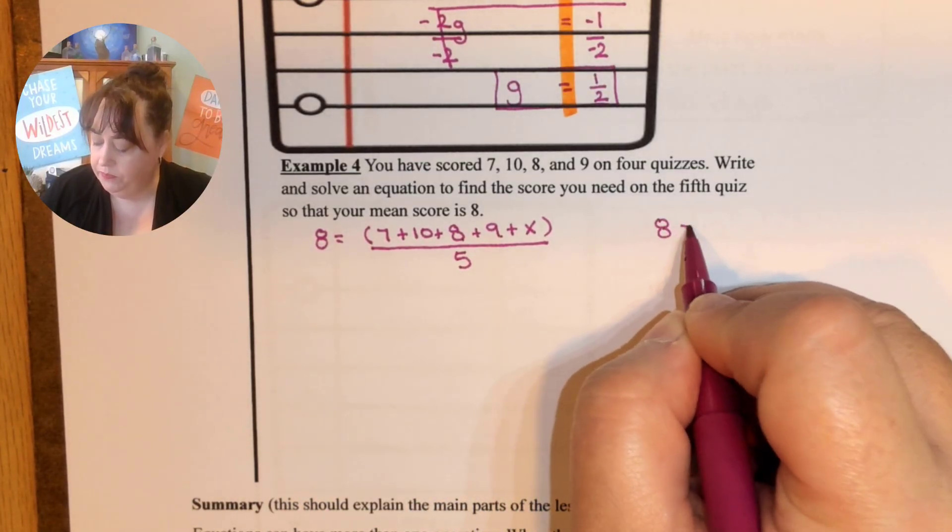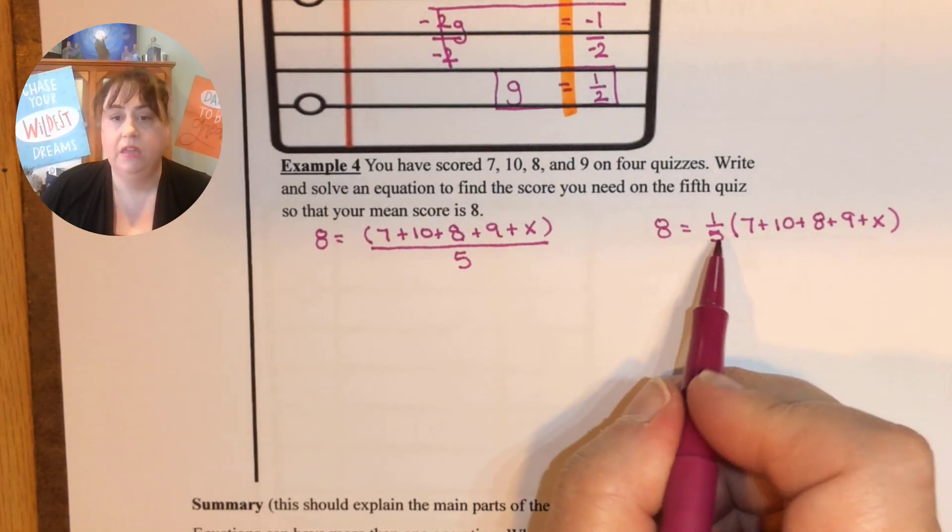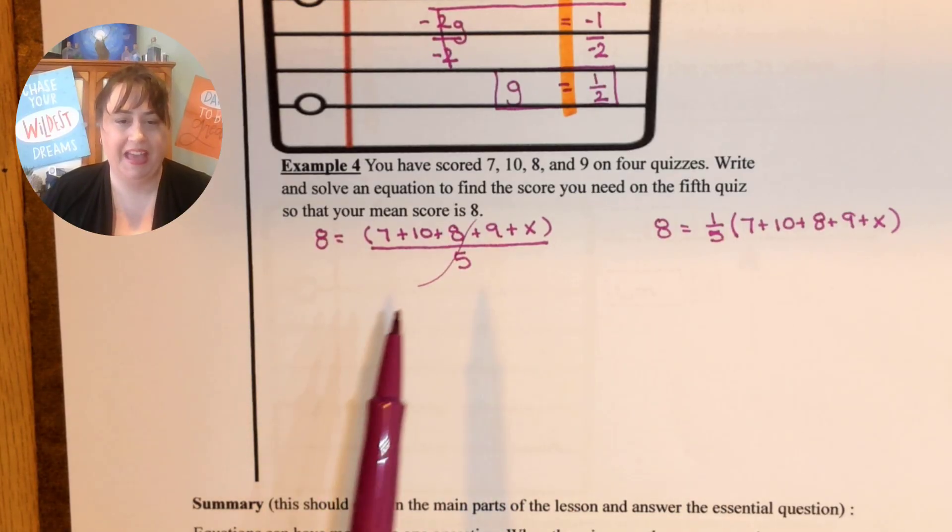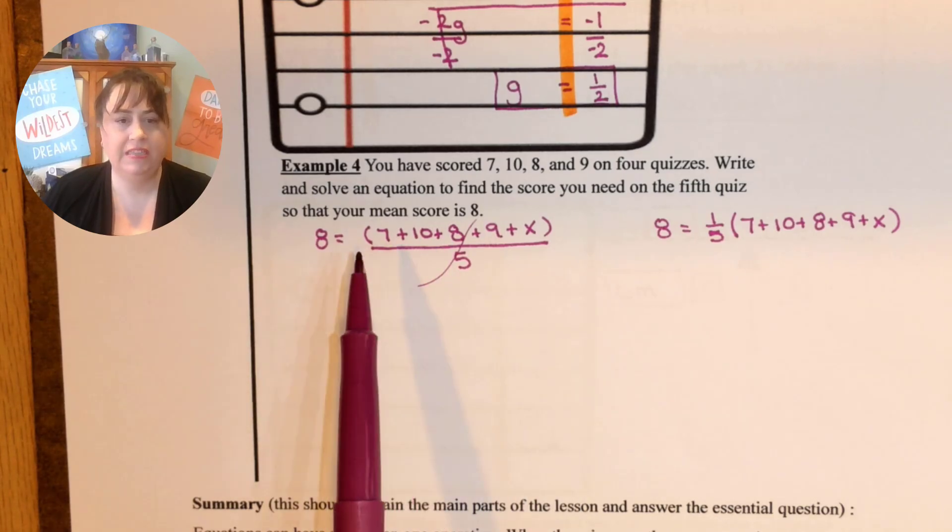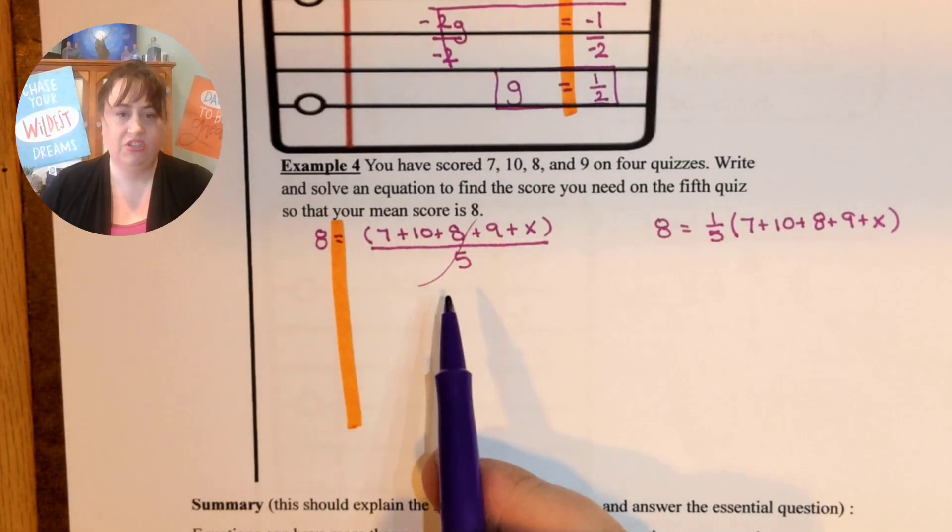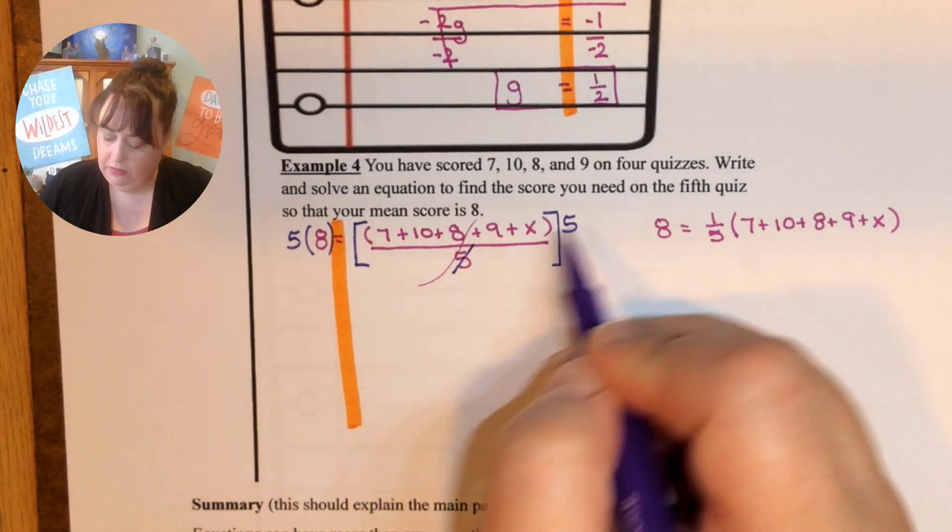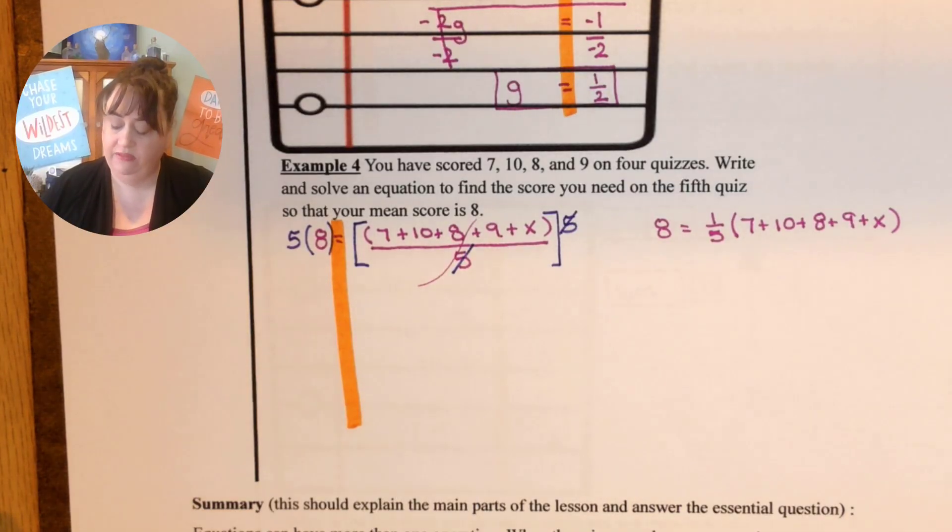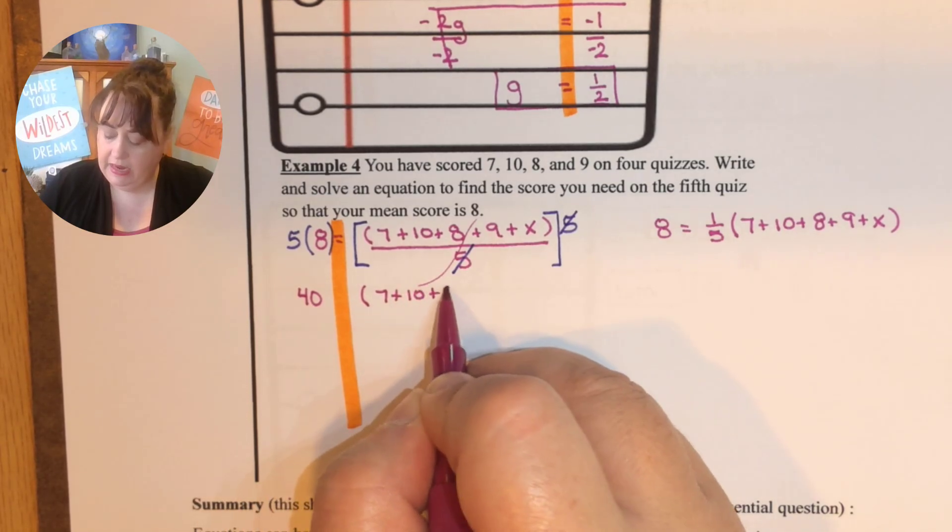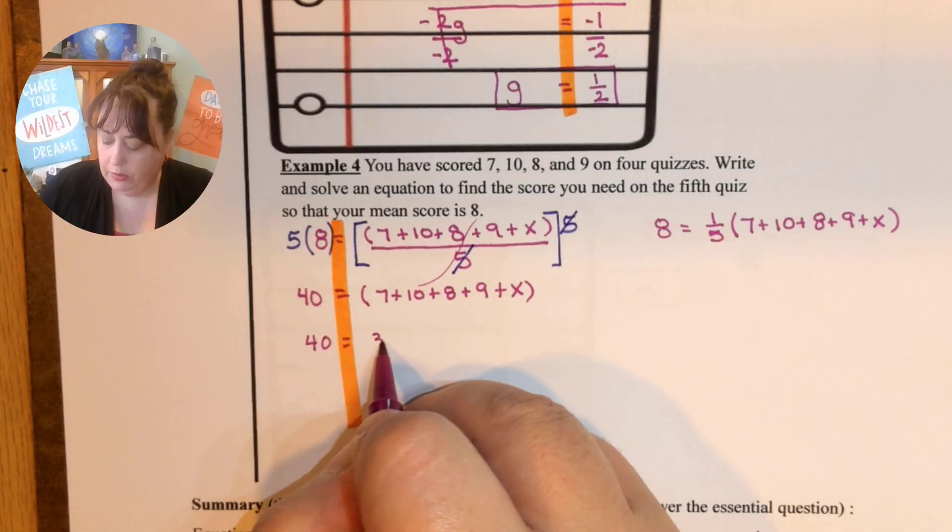Another way that we could have written this was 1 fifth of 7 plus 10 plus 8 plus 9 plus x. Dividing by 5 is the same as multiplying by 1 fifth. I like this way better because that's how most of us think of means. So this is dividing. This is a great big grouping symbol right here. So we can get rid of that pretty quickly after I draw on my road. How do I undo division? I undo division by multiplication. So that's 1 and 5 times 8 is 40. And then I have this big mess. 7 plus 10 plus 8 plus 9 plus x. So 40 equals 34 plus x.